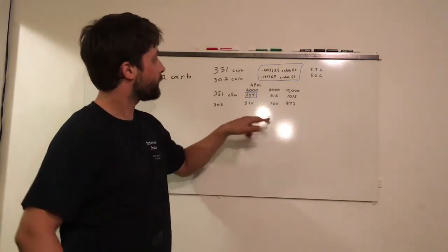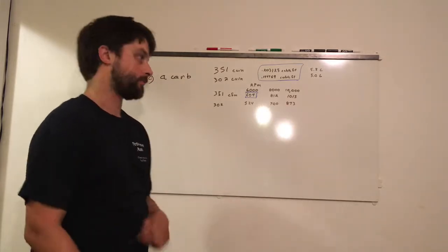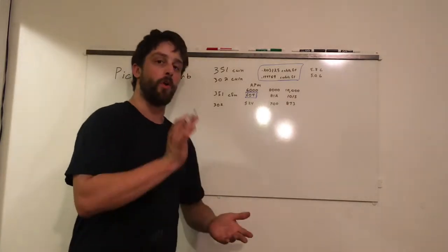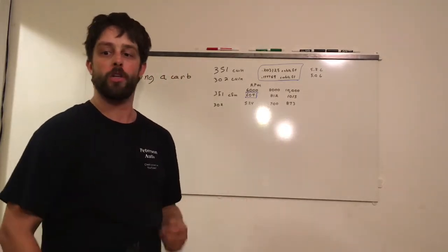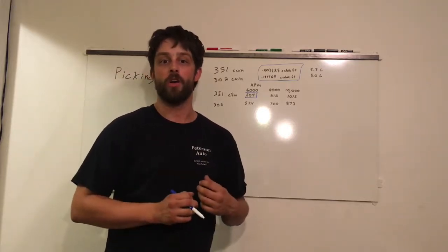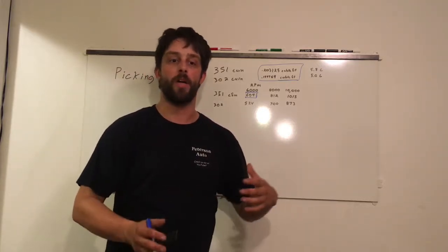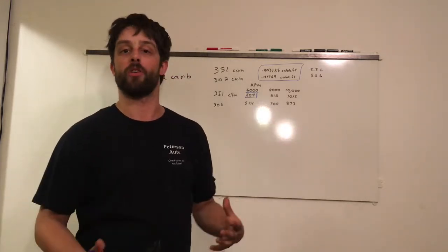302, again, 524, 700, and 873. You need to take volumetric efficiency into the equation. Volumetric efficiency is how much air your engine is going to use compared to the actual volume inside the cylinders.